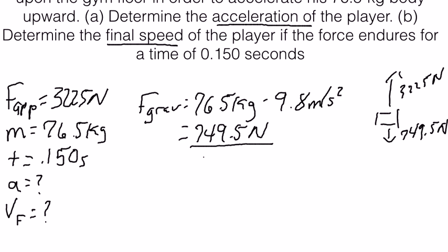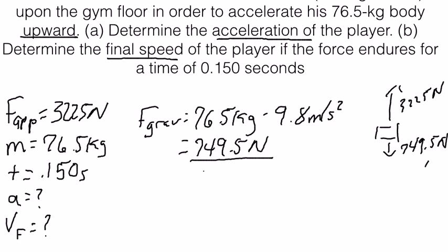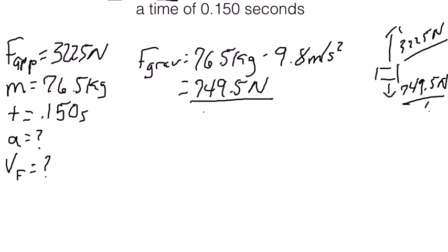Looking at our force diagram, notice that I did not draw a friction force, or a force applied, or a rightward force. That's because we're talking about a player going in an upward direction. If he's going upward, we don't have to account for the friction force or any directional horizontal force. All he's doing is jumping upward and coming back down. We just needed the force with which he jumped and the force of gravity acting against him.